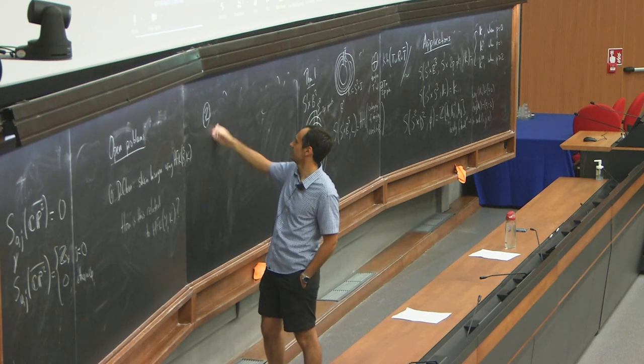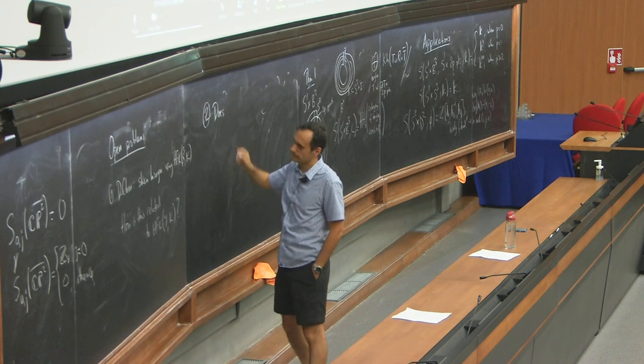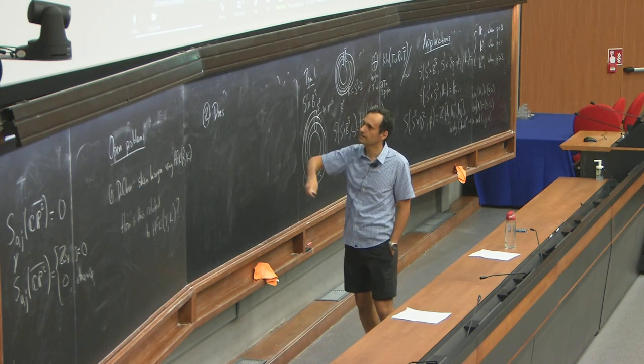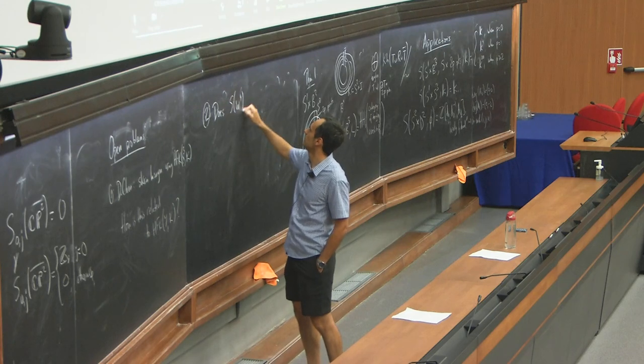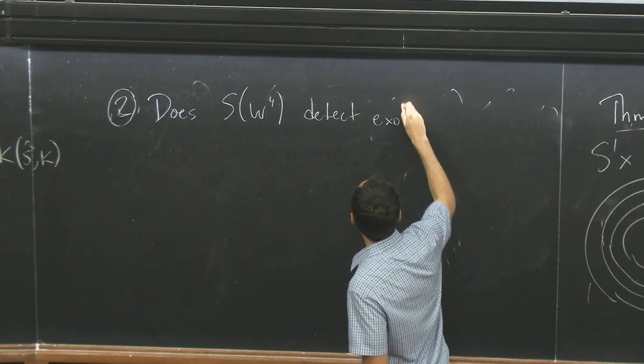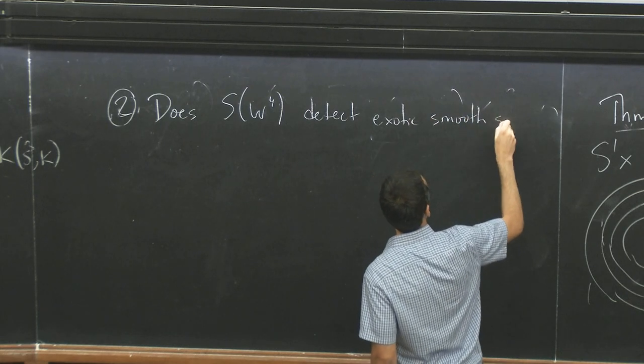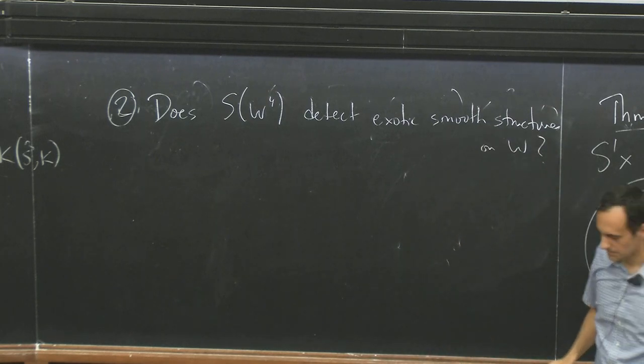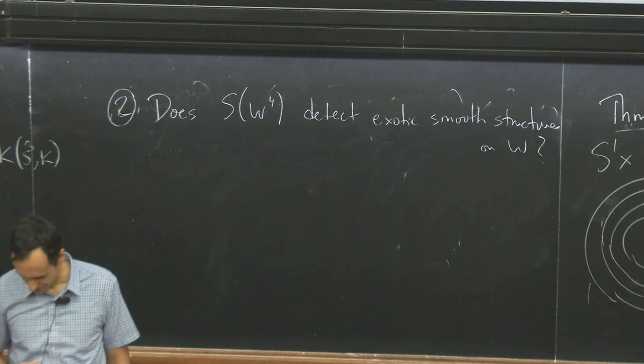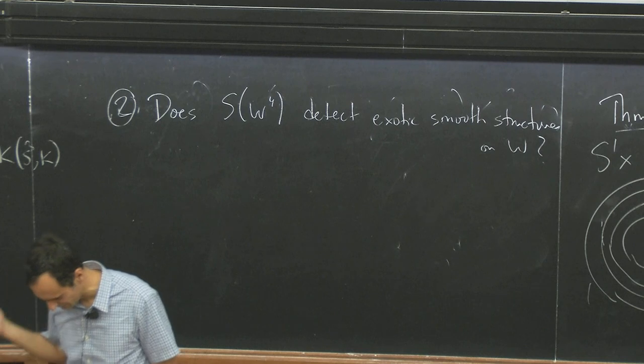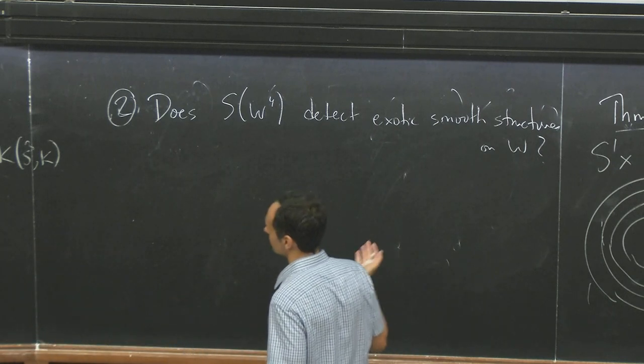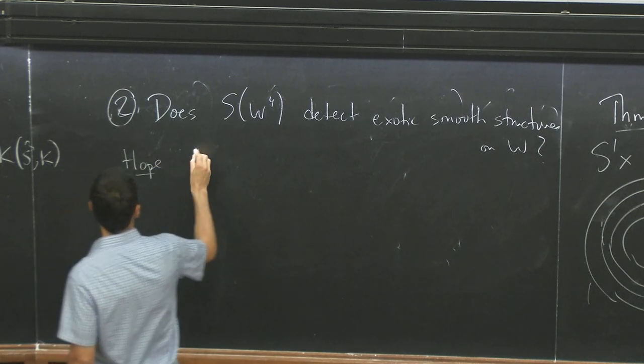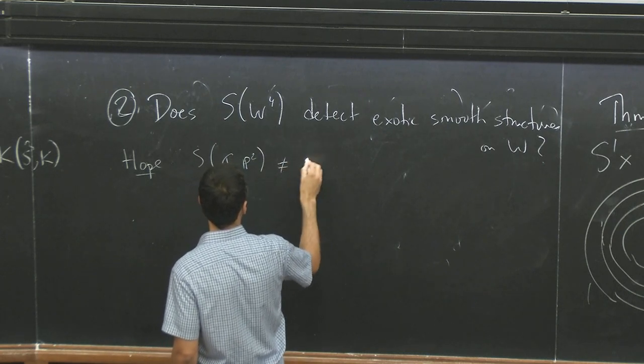Here's something that would be interesting. So this is an invariant of four-manifolds. It's based on, let's say we just look at closed four-manifolds with the empty link. So does S of W detect exotic smooth structures on W? Well, it comes from Khovanov homology, which can be used to show that there are exotic structures on R4, so maybe there's some hope.